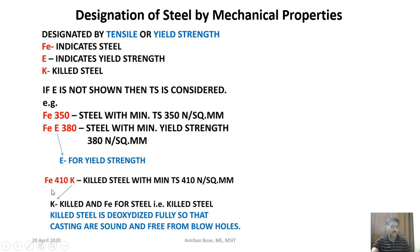Fe 410K — the 'K' indicates it is a killed steel, where 410 is the minimum tensile strength. In killed steel, aluminium and silicon powders are mixed so that they absorb all the oxygen and dissolved gases present in the metal. As a result, no dissolved oxygen remains, the casting is very sound, and no blowholes are found when casting with killed steel.